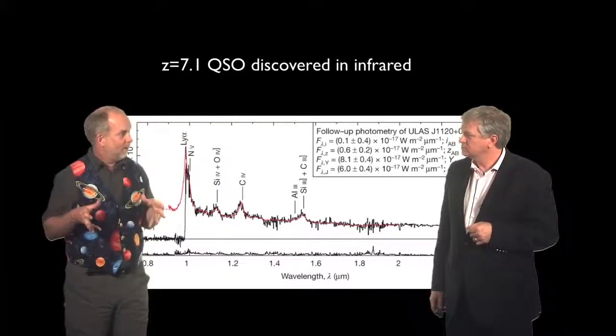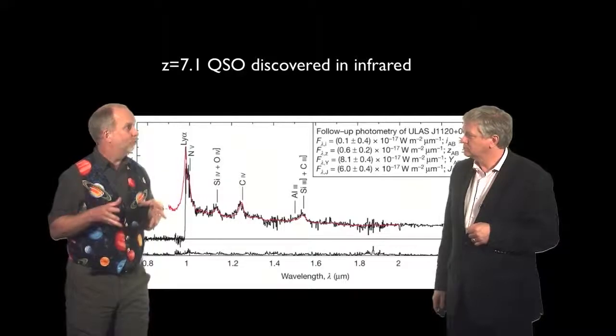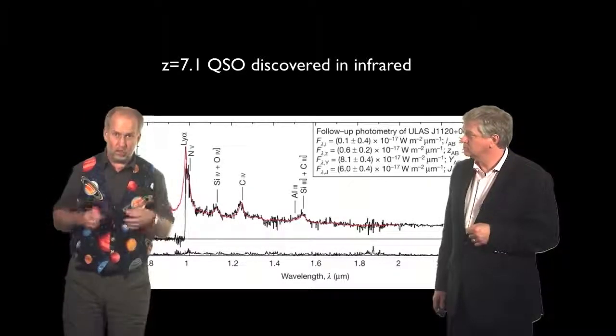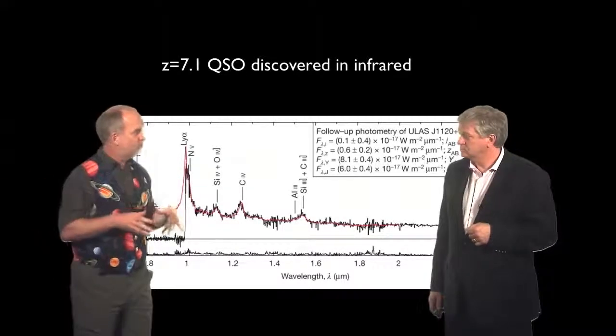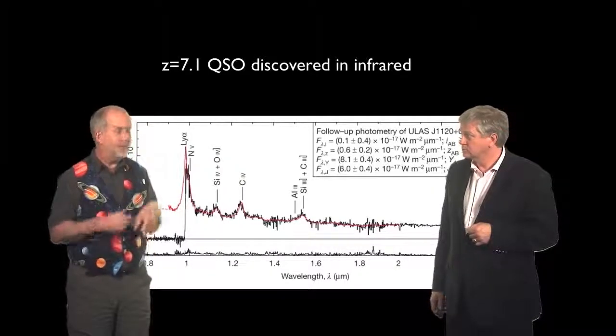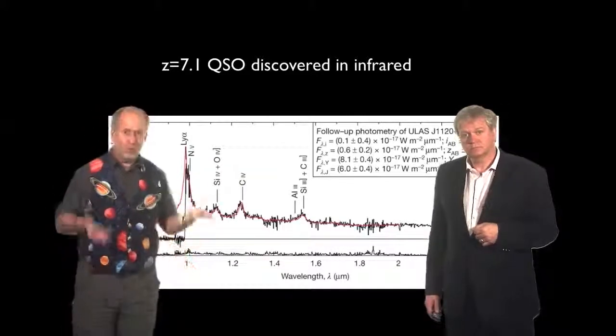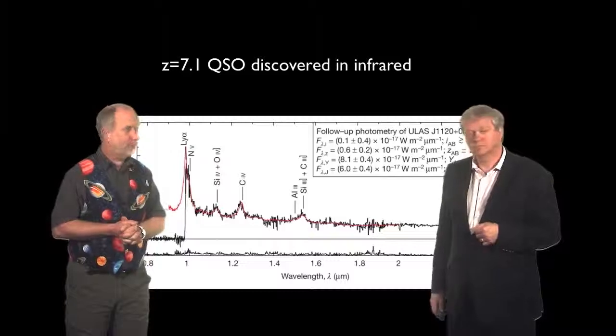So it looks like it's all done and dusted. The universe started off very hot. At redshift about a thousand, it cooled down enough to become neutral. It stayed neutral all the way down to redshift about six, when something, but not quasars, put out enough ultraviolet to ionize it again. Nice and simple.